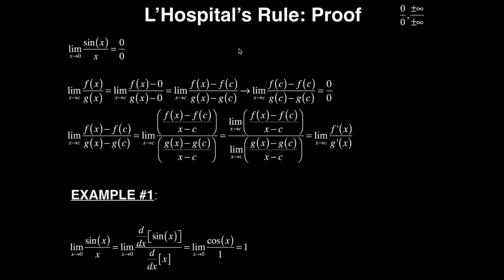So what is L'Hôpital's rule useful for? Here I have a limit as x goes to 0 of sin(x) over x. If you just plug in 0, sin(0) is 0, and x is just 0, so you get 0 over 0 — we can't have that as an answer. But this is actually not 0 over 0; it turns out to be 1. Unless you want to do some complicated trigonometry with a unit circle, you should use L'Hôpital's rule, which is a much easier way of evaluating this limit.